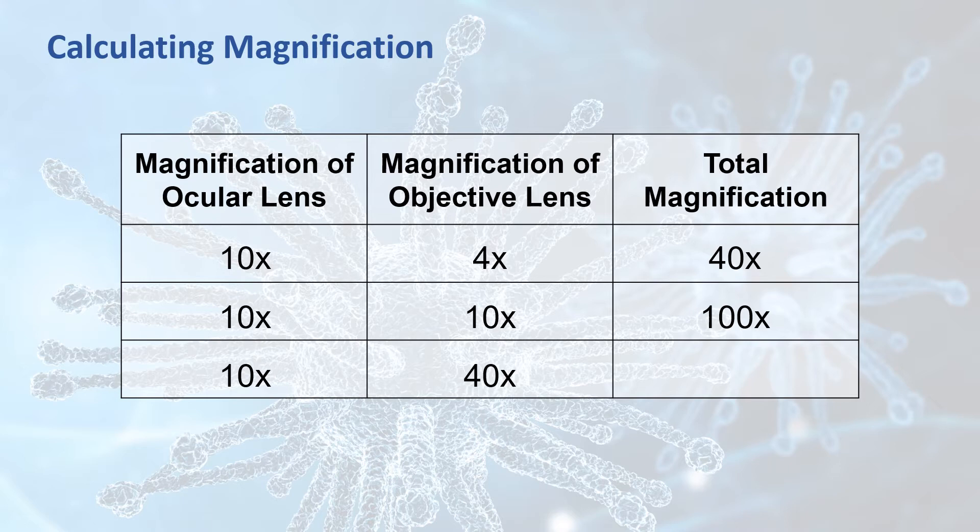And finally, when using the highest power objective lens, the total magnification is 10 times 40, or 400 times, so that any specimen that you view with this magnification looks 400 times larger than it actually is.